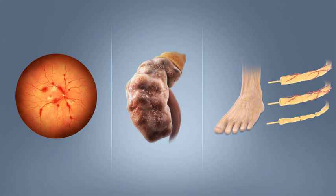The fastest prevalence increase is expected to occur in Asia and Africa, where most people with diabetes will probably live in 2030. The increase in rates in developing countries follows the trend of urbanization and lifestyle changes, including increasingly sedentary lifestyles, less physically demanding work and the global nutrition transition, marked by increased intake of foods that are high energy-dense but nutrient poor, often high in sugar and saturated fats, sometimes referred to as the Western-style diet. The global number of diabetes cases might increase by 48% between 2017 and 2045.